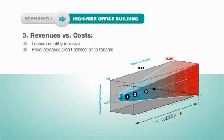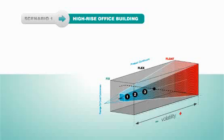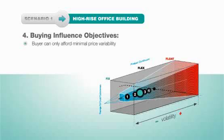The building's leases are utility-inclusive, so that changes in price are not passed on to the tenants. Future cost increases would take money straight from the bottom line. Likewise, cost decreases add to the bottom line. In this case, the property manager should consider a product that falls on the left side of the range with more fixed components, but they can afford to accept some price variability.